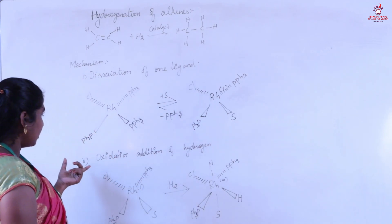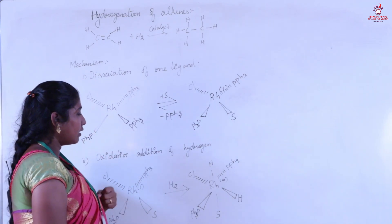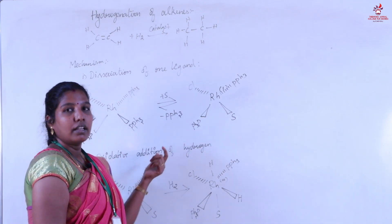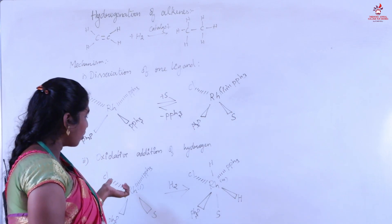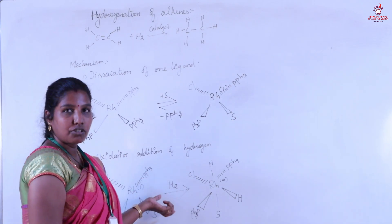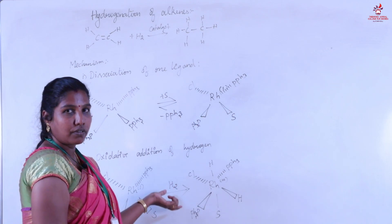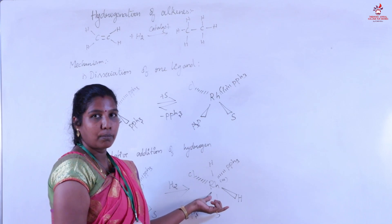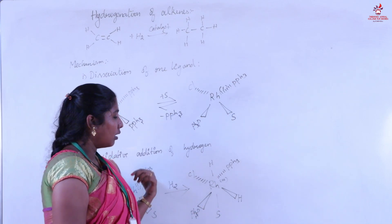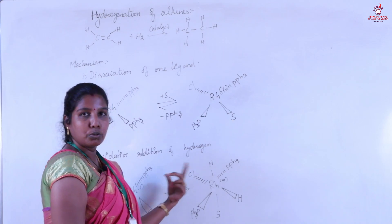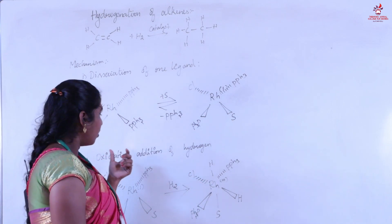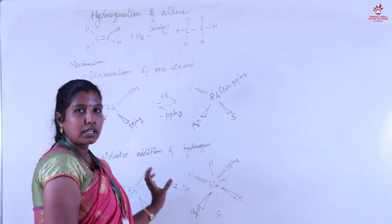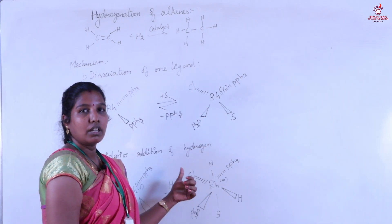Next we move on to the second step: oxidative addition of hydrogen. Here the rhodium catalyst is in the plus one oxidation state. Upon addition of hydrogen, the rhodium is converted to a six-member coordination number and the rhodium oxidation state is also converted to plus three. That is why we call it oxidative addition of hydrogen — here both the coordination number and the oxidation state increase.